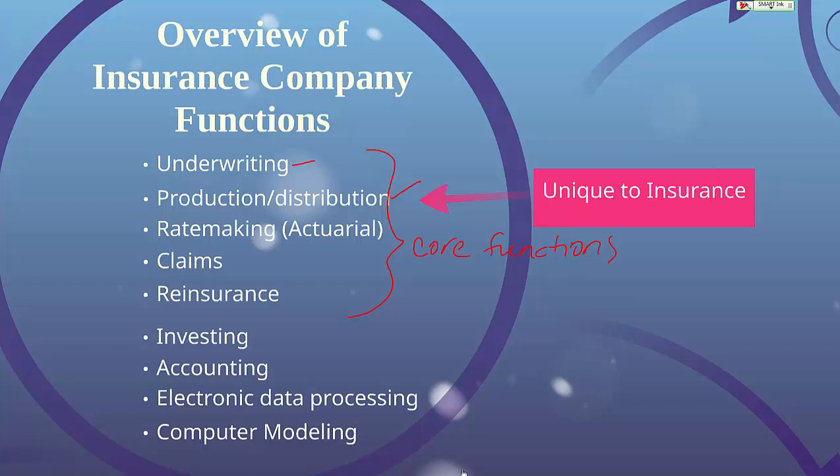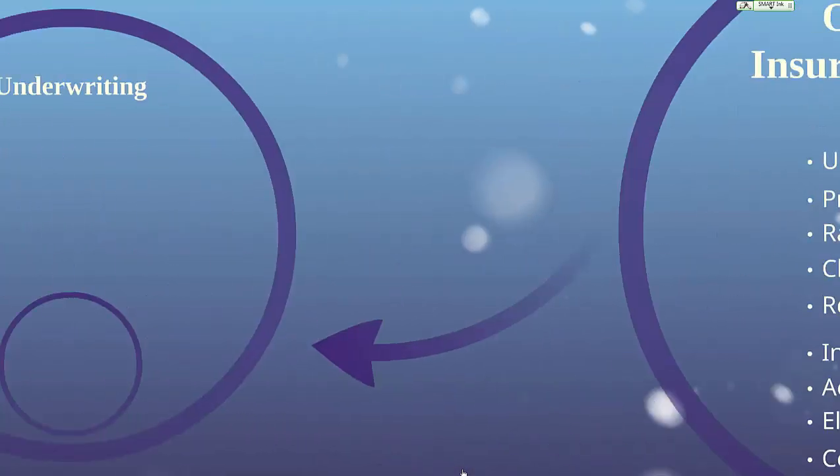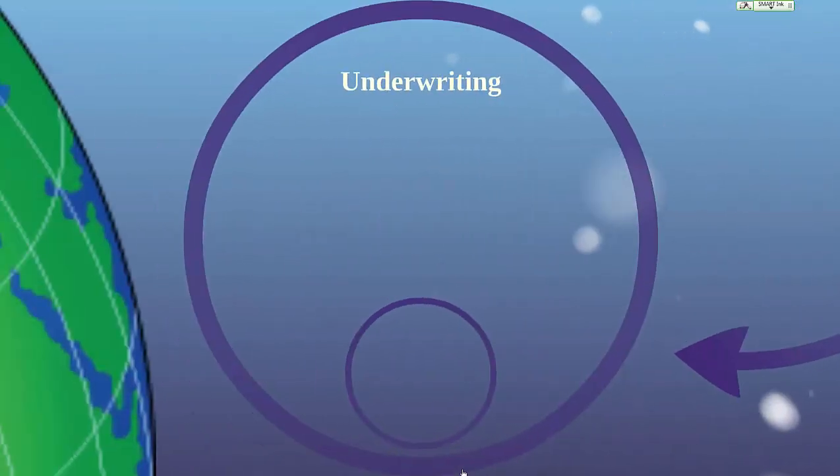These other areas — investing, accounting, electronic data processing, and computer modeling — are all extremely important in the insurance business, and we'll talk about each one of these later. Let's begin looking at underwriting.